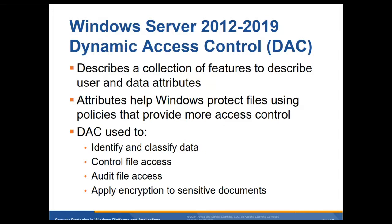Windows Server 2012 to 2019 dynamic access control describes a collection of features to describe user and data attributes. Attributes help Windows protect files using policies that provide more access control — discretionary access control used to identify and classify data. If you have data, it will look for keywords like social security numbers and classify it, control file access, audit file access to see who's been in there, and apply encryption to sensitive documents. If it finds a social security number, it may encrypt that document.